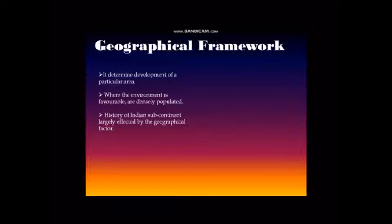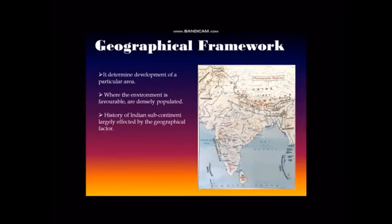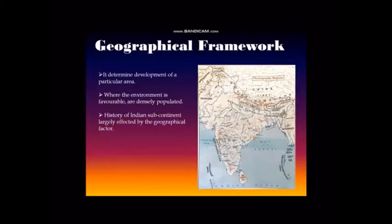Now, dear students, let's come to geographical factors. Geographical factors or geographical framework play an important role in shaping the history of a country or a region. The Indian subcontinent, consisting of India and its neighboring countries, has distinct geographical features. An important feature is the vast fertile plains of rivers Indus and Ganga, where the first human settlements came up. Some of the earliest cities flourished on the banks of the river Indus and its tributaries, and later cities were set up along the banks of river Ganga and its tributaries. Many kingdoms emerged in the region during the ancient period.